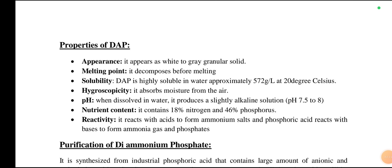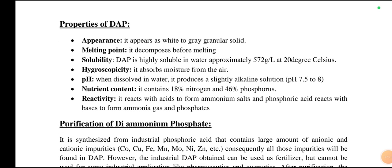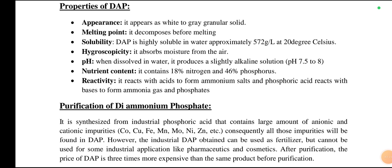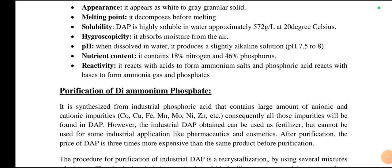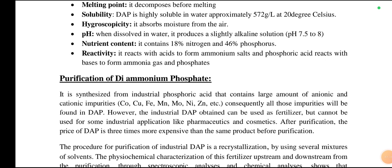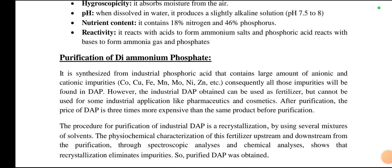The properties of diammonium phosphate include: Appearance — it appears as a white to gray granular solid. Melting point — it decomposes before melting. Solubility — it is highly soluble in water, approximately 572 grams per liter at 20°C. Hygroscopic capacity — it absorbs moisture from the air. pH — when dissolved in water, it produces a slightly alkaline solution, ranging from 7.5 to 8. Nutrient content — it contains 18% nitrogen and 46% phosphorus. Reactivity — it reacts with acids to form ammonium salts and phosphoric acid, and reacts with bases to form ammonia gas and phosphates.